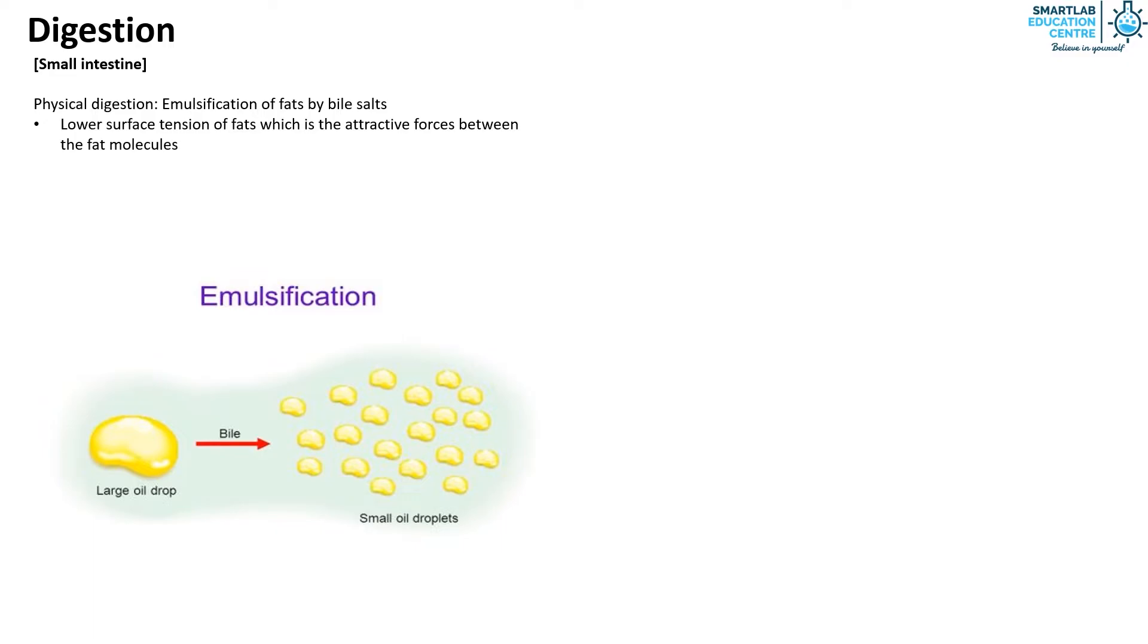In the small intestine, the physical digestion occurring is the emulsification of fats by bile salts. The gallbladder stores bile made by the liver and releases it into the small intestine. Emulsification lowers the surface tension of fats, which is the attractive forces between fat molecules. Large fat droplets break into tiny fat droplets suspended in water, forming an emulsion. Emulsification increases the surface area to volume ratio of fats, speeding up their digestion by lipase.